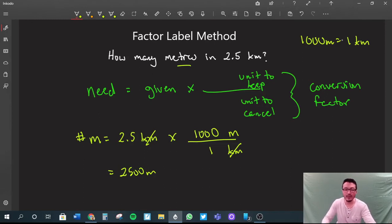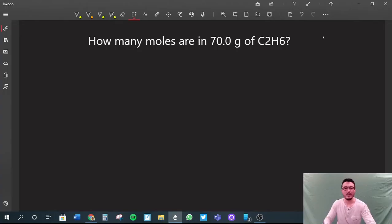That is the factor label method, and that will help you solve many other sorts of problems moving forward. In our first example, we're going to answer this question: how many moles are in 70 grams of C2H6? That is ethane.